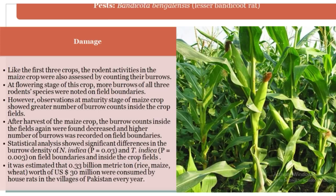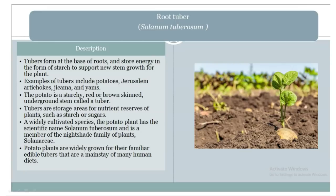Root tubers (Solanum tuberosum): tubers form at the base of roots and store energy in the form of starch to support new stem growth for the plant. Examples of tubers include potatoes, Jerusalem artichokes, jicama, and yam. The potato is rough, red- or brown-skinned, and is an underground stem called a tuber. Tubers are storage areas for nutrient reserves of the plant, such as starch or sugar. The potato plant has the scientific name Solanum tuberosum and is a member of the nightshade family, Solanaceae. Potato plants are widely grown for their edible tubers, which are a staple of many human diets.